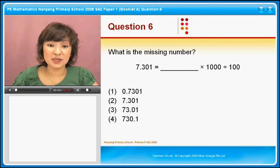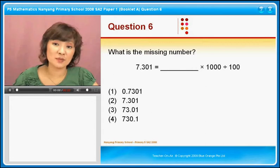Question 6. What is the missing number? 7.301 is equal to what times 1,000 divided by 100?